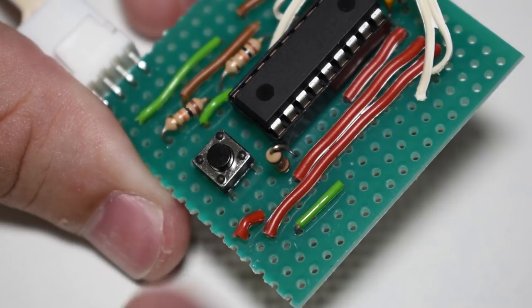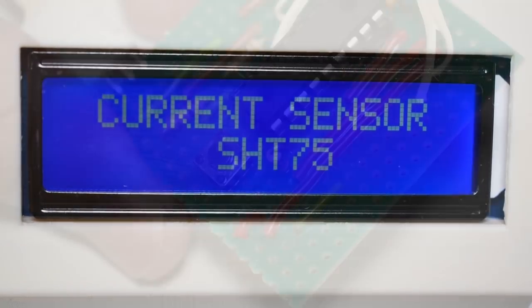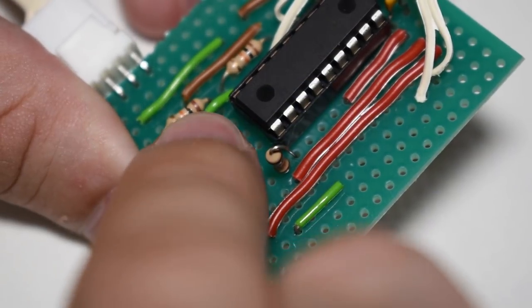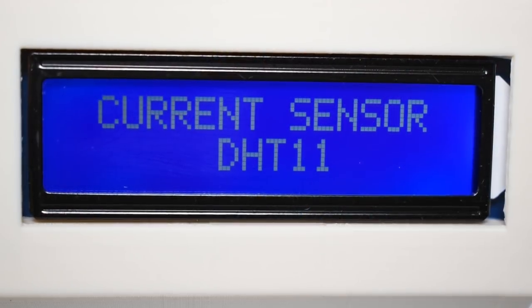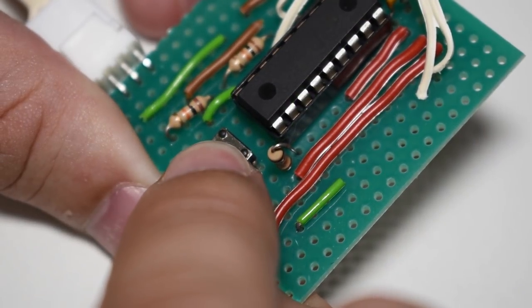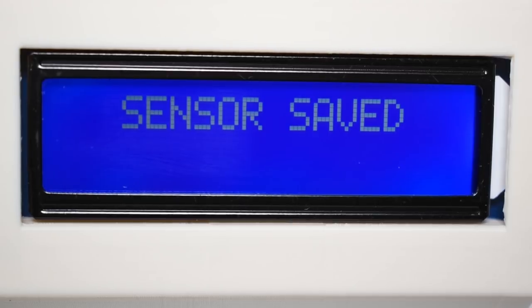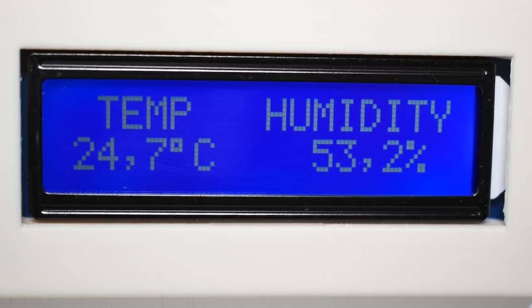Next, make short presses with the button to toggle the sensor type. When you get the correct sensor on the display, keep the button pressed to store it in the internal memory. Next time you power up, it will remember the sensor you are using.